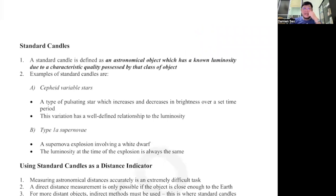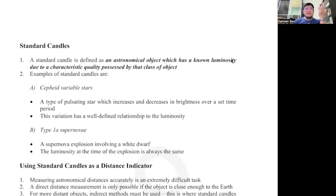Let's talk about what a standard candle is. The definition of a standard candle is an astronomical object that has a known luminosity. For one mark you can just write that. But if the question asks for two marks, add: due to a characteristic quality possessed by that class of object.